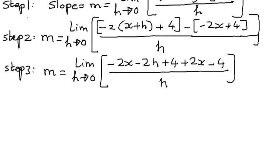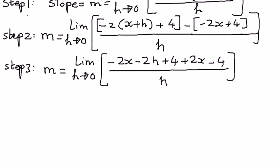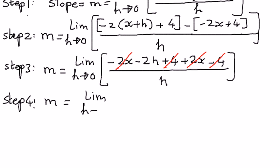Now we are ready to simplify. We have a negative 2x and a positive 2x, so we can cancel those out. We have a positive 4 and a negative 4, we can cancel those out. Therefore, the next step gives us: slope is equal to the limit as h approaches 0, and we are left with negative 2h divided by h. We have h in the numerator and h in the denominator, so we can cancel that out.